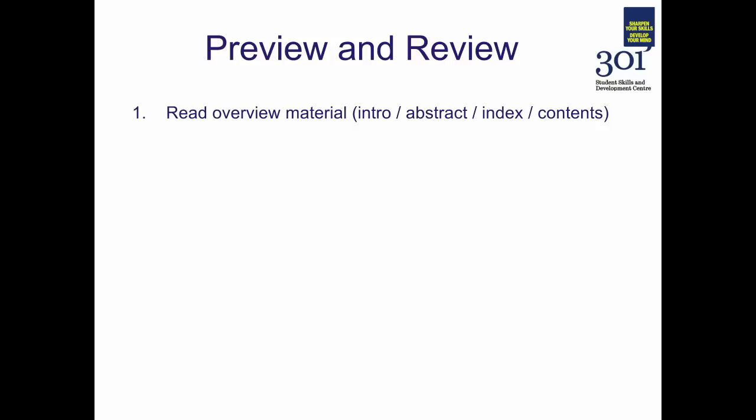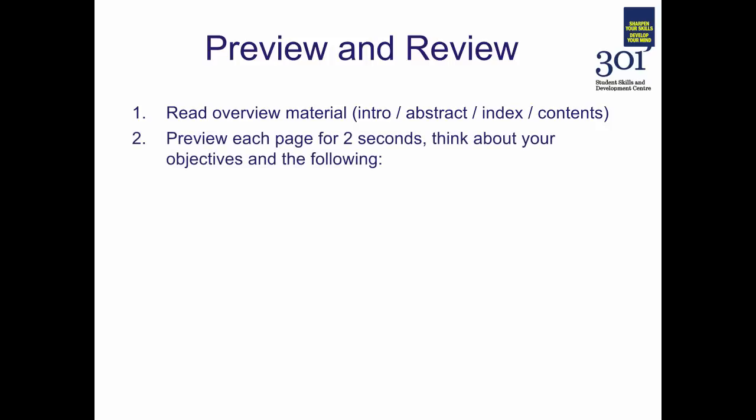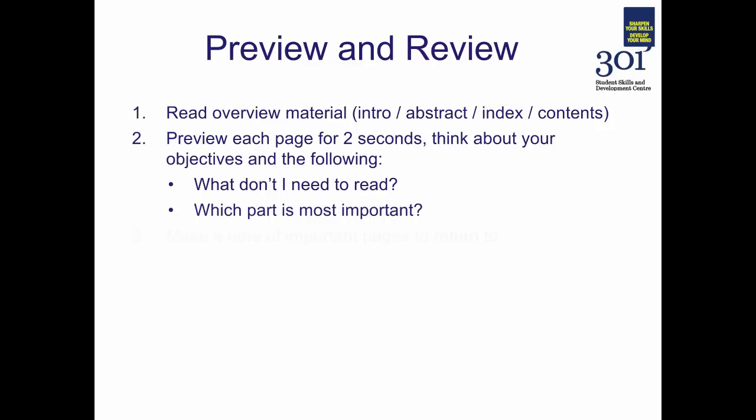The steps you'll need to follow for the preview and review technique: firstly, read any overview material that's available — so it might be an introduction, there might be an abstract, it might be an index or a contents page. Next, you're going to preview each page for just two seconds — this is a really quick scan of the page. As you're doing so, think about the reading objectives that you set yourself and look out for: what don't you need to read, and which part is most important? Then make a note of the important pages to return to. If you're using off prints, you can annotate directly on the text. Otherwise, you might want to use a notepad or post-it notes to mark a place in the text.